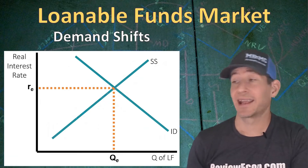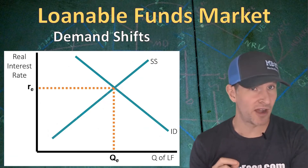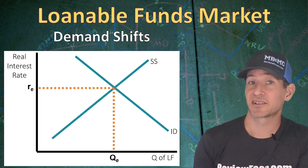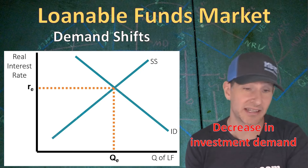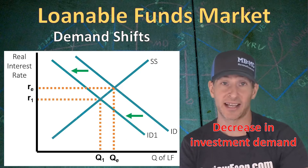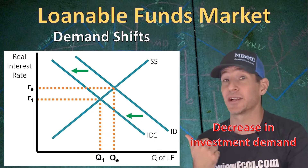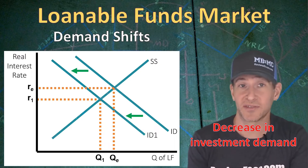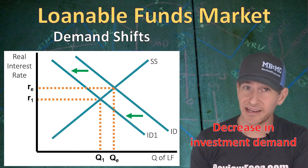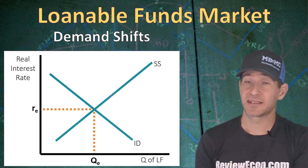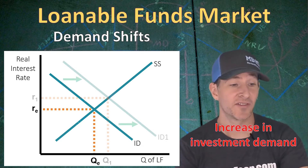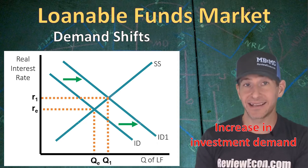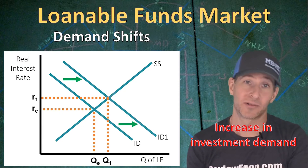When it comes to demand shifts, anything that changes potential profit for future investment will shift the demand curve. If there's a decrease in business confidence, that decreases investment demand, shifting it left, causing a decrease in the real interest rate and also decreasing the quantity of gross investment. If there's an increase in business confidence, we'll see the investment demand curve shift right, which increases the real interest rate and increases the quantity of investment or loanable funds.